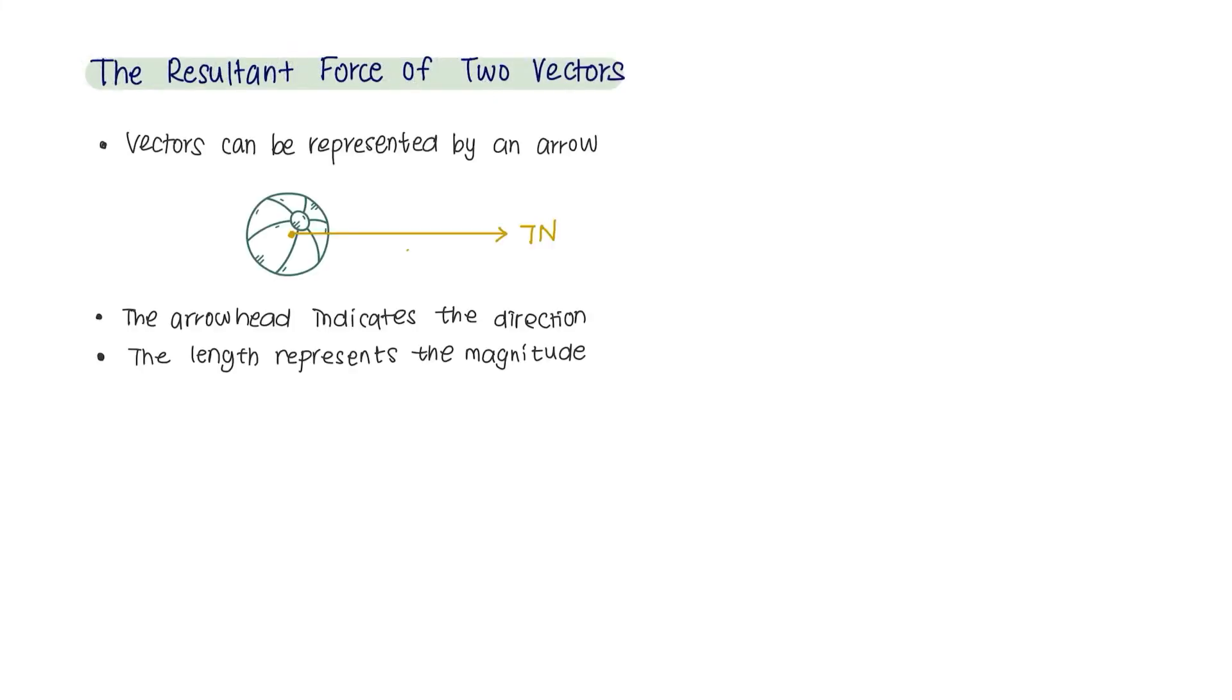Resultant force. Vectors can be represented by an arrow. The arrowhead indicates the direction and the length represents the magnitude. For instance, if I had an object being pulled in opposite directions with different forces, the object would move in the direction with the stronger pull. We call this resultant force.